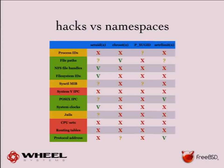If you break into the OpenSSH sandbox, and someone is using a tool that takes a password as an argument, you can list process names and all arguments and get the password. For file paths, chroot helps. Setuid helps in that you cannot access root-owned files. Setrlimit helps a bit because you cannot create new descriptors, though you can still list directory contents.